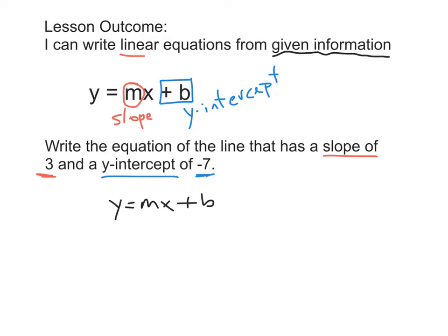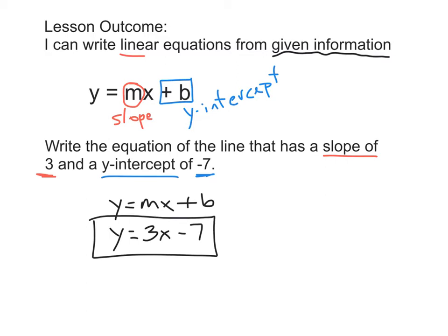Here's the equation, and now we're going to put 3 in for our slope. Slope is m, the coefficient of the x term. So we write y equals 3x, and then our y-intercept — plus b — is negative 7. We can write plus negative 7, or we can write minus 7. So we wrote the equation with the given information: slope is 3 and y-intercept is negative 7.